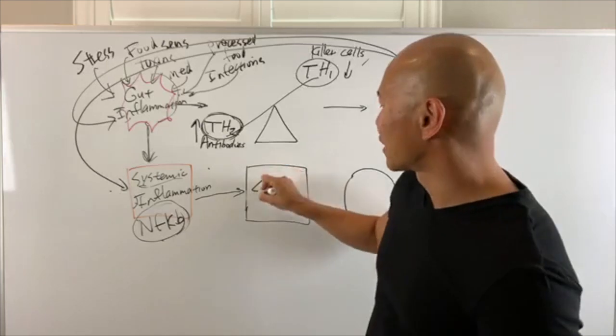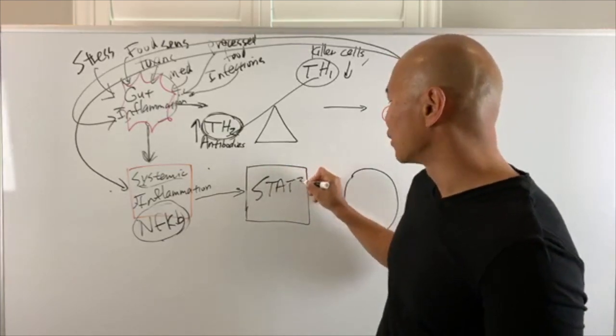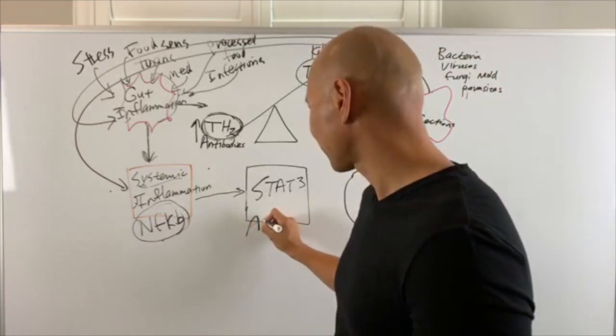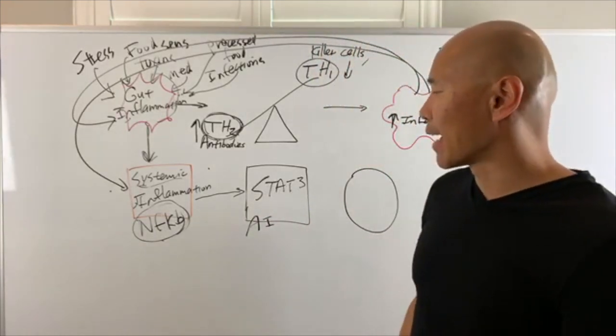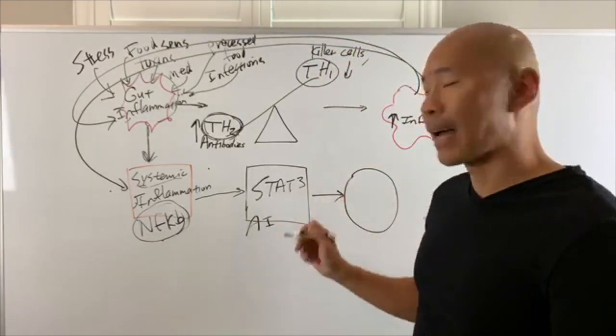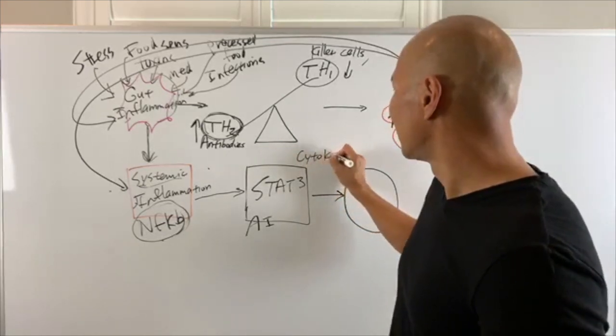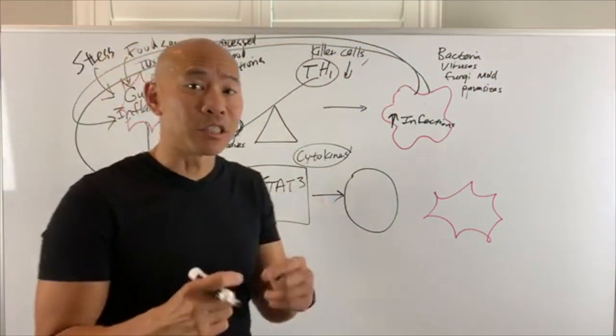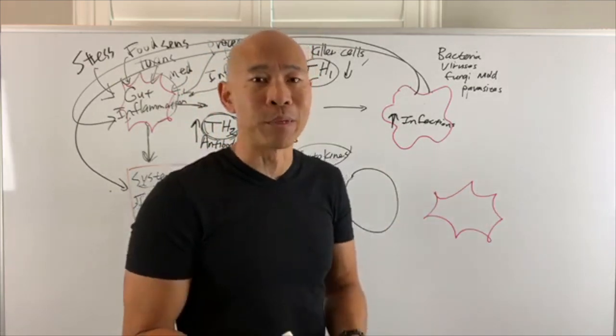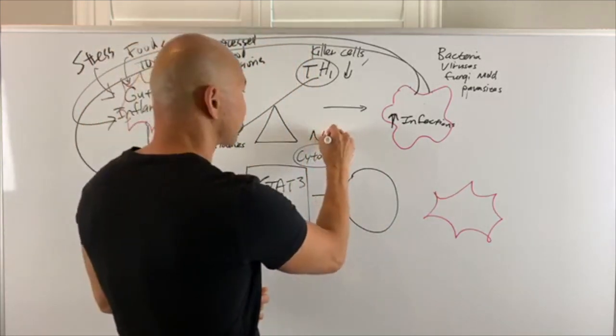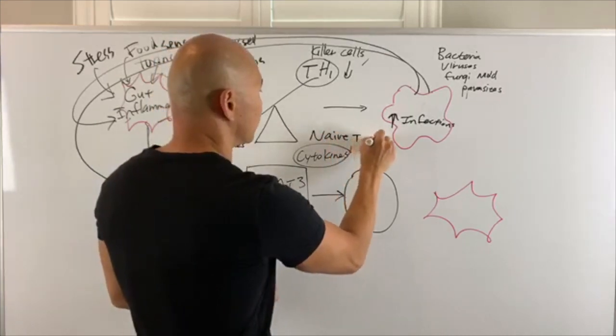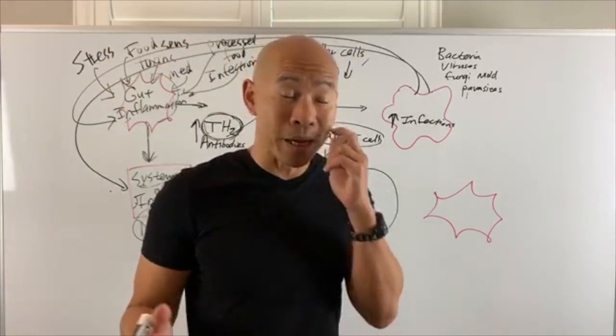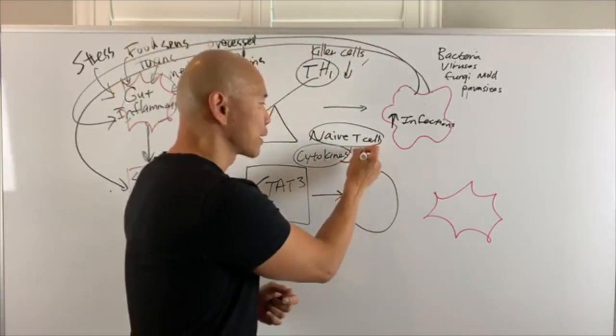Now the systemic inflammation can trigger what's called STAT-3. And STAT-3 is a protein family that basically triggers autoimmune. And the way it does that is that it basically causes these cytokines. Remember cytokines are immune messengers that send text messages to each other. And actually some of these can actually mature and differentiate into other immune cells.